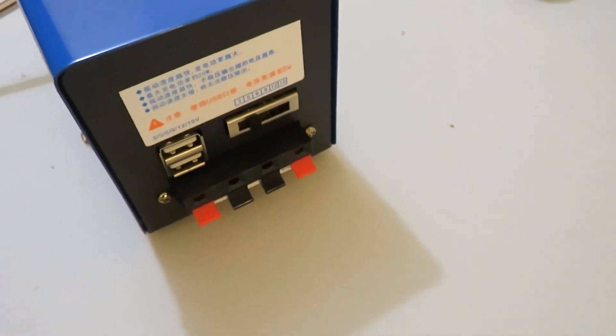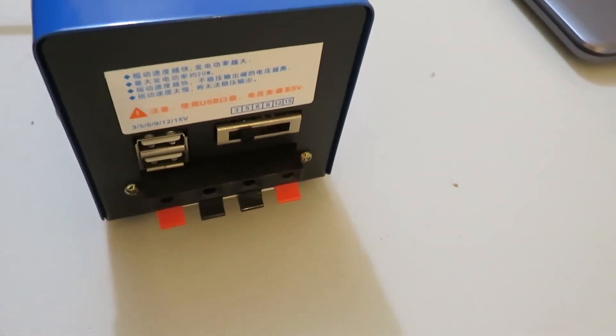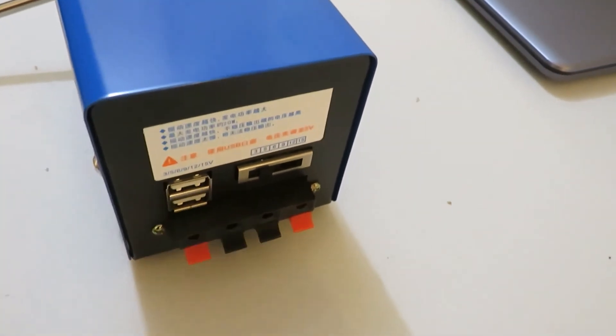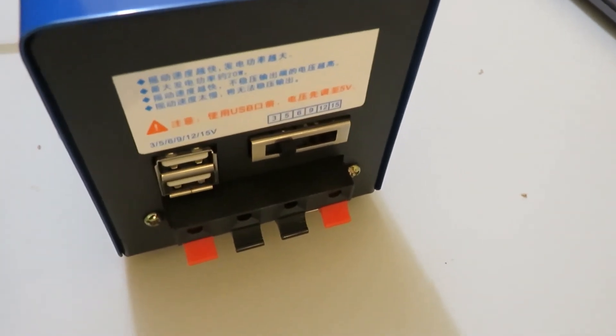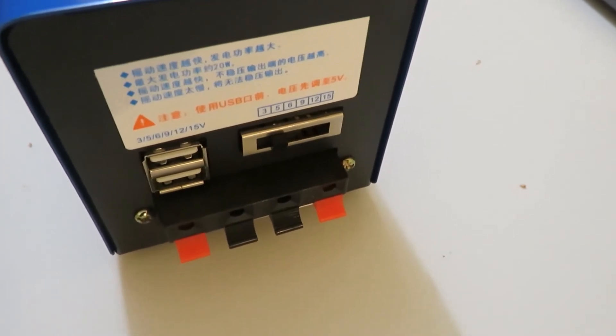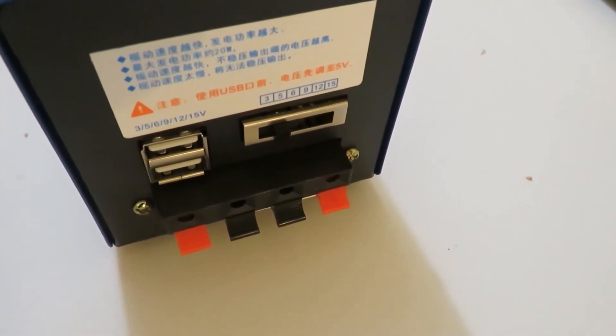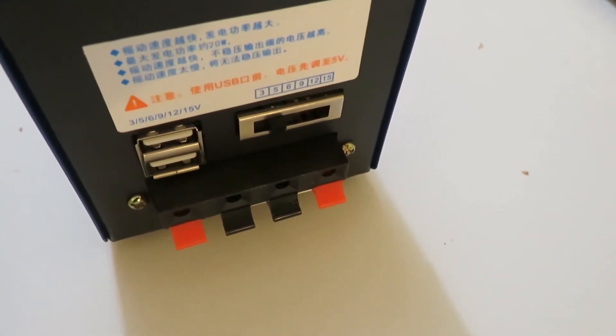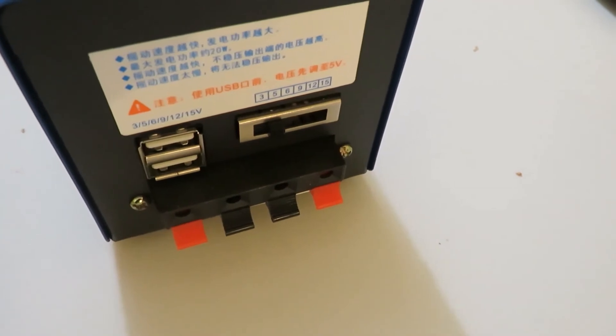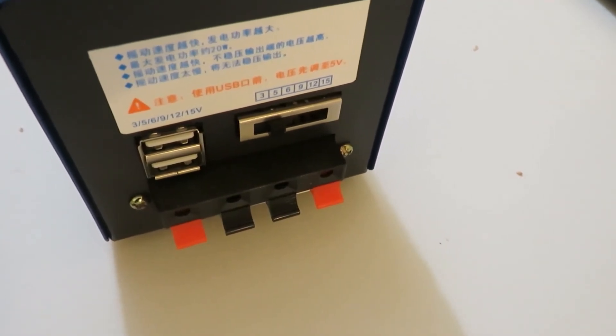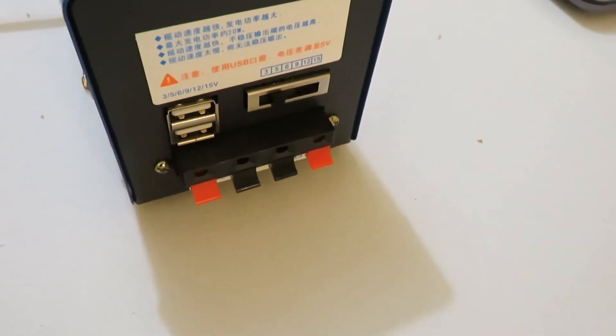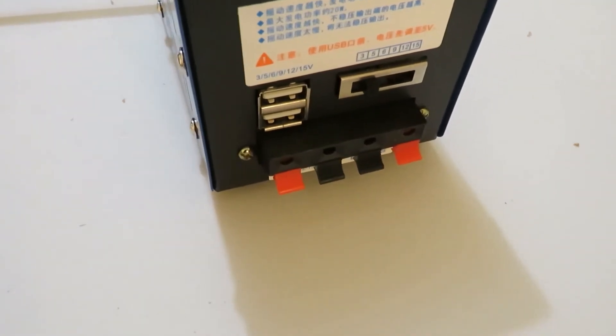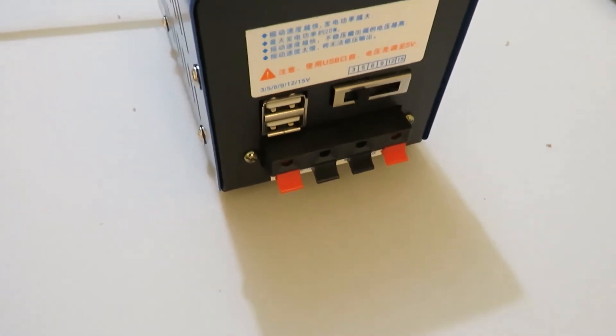The label tells: the faster the rotational speed, the greater the power generation. The maximum power generation is about 20 watts. The faster the RPM, the higher the voltage at the unregulated output. If the rotational speed is too slow it will not be able to stabilize the output voltage. It also tells: before using the USB port, adjust the power supply voltage to 5 volts. Below the connector terminals, the label shows the highest voltages available at the unregulated port.